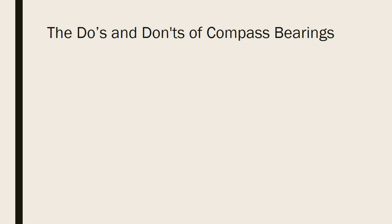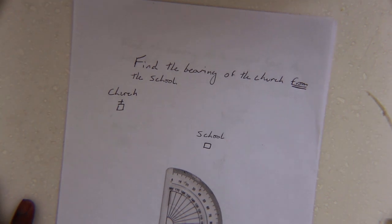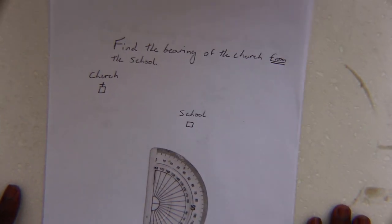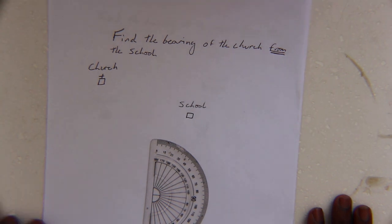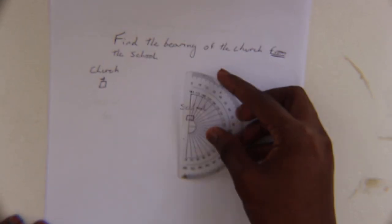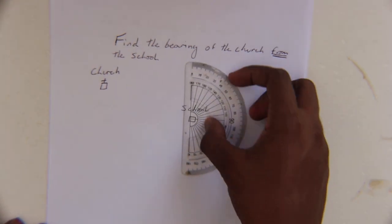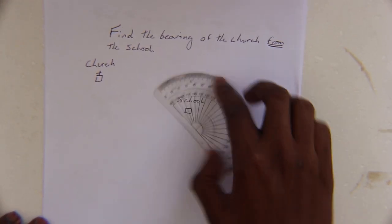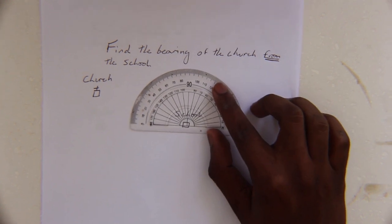Finally, we will look at the do's and don'ts of compass bearings and the correct technique to hold your protractor. The first thing you want to do when finding the bearing is place your protractor vertically. You don't want to start your bearing incorrectly, as this will give you an incorrect reading.